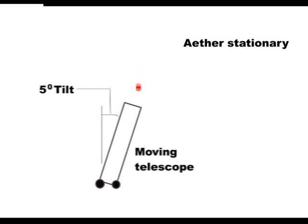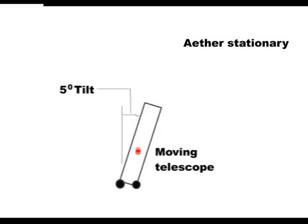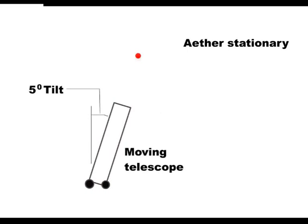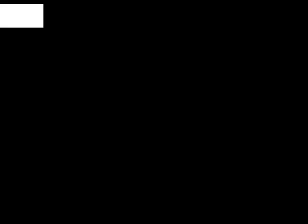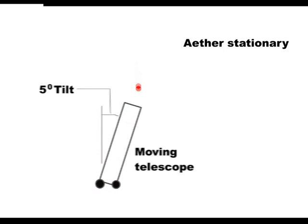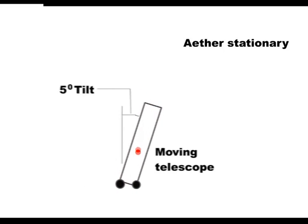In 1729, Bradley found that he had to tip his telescope forward very slightly to get a star in the center of his telescope. It was assumed that this was due to the motion of the Earth around the Sun.